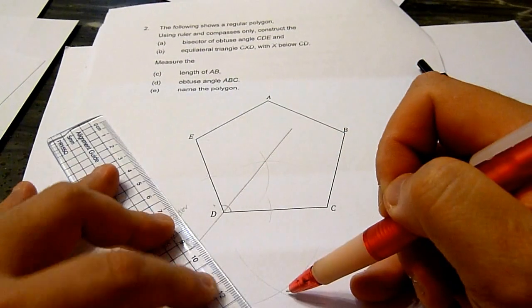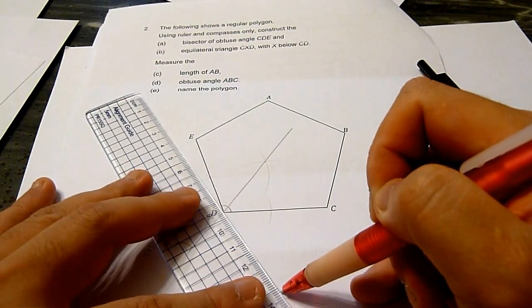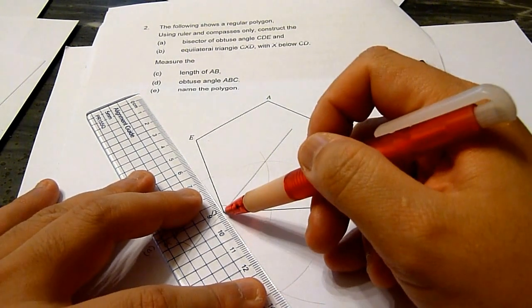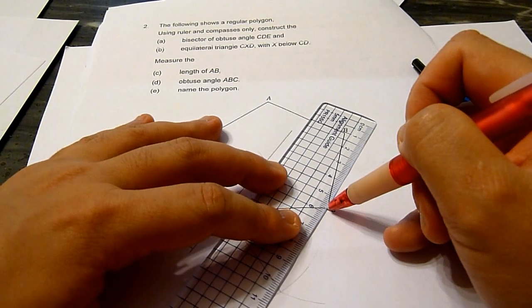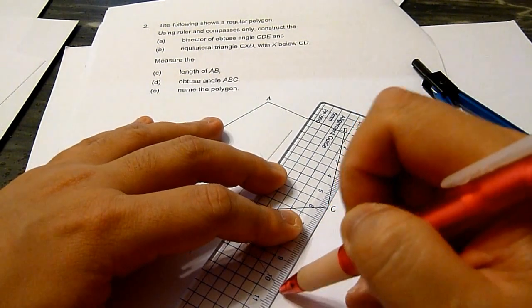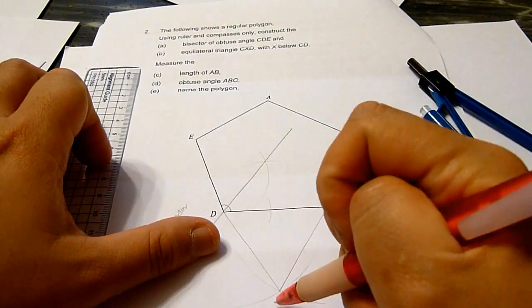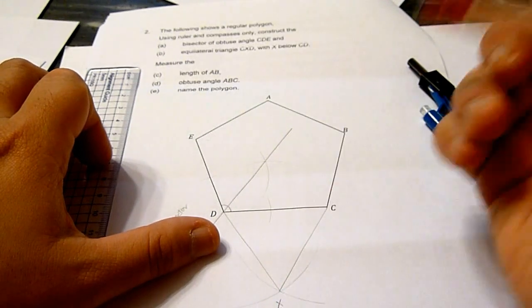Now, we join the intersection point to the two points. This will be X.